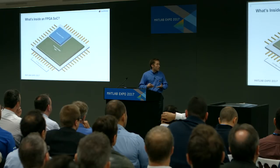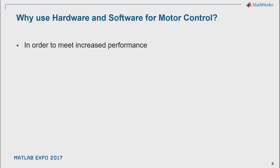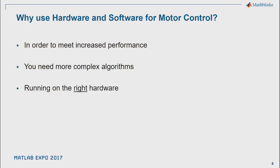Even once you've decided on partitioning, getting an efficient implementation for how the processor and FPGA talk to each other and exchange data can be time-consuming and tricky. If you can address those challenges, you're in a great position — you can choose where to run your algorithms for best overall performance or quickest implementation. It's not just about running algorithms where they run fastest; it's about running them where it makes most sense to design them.